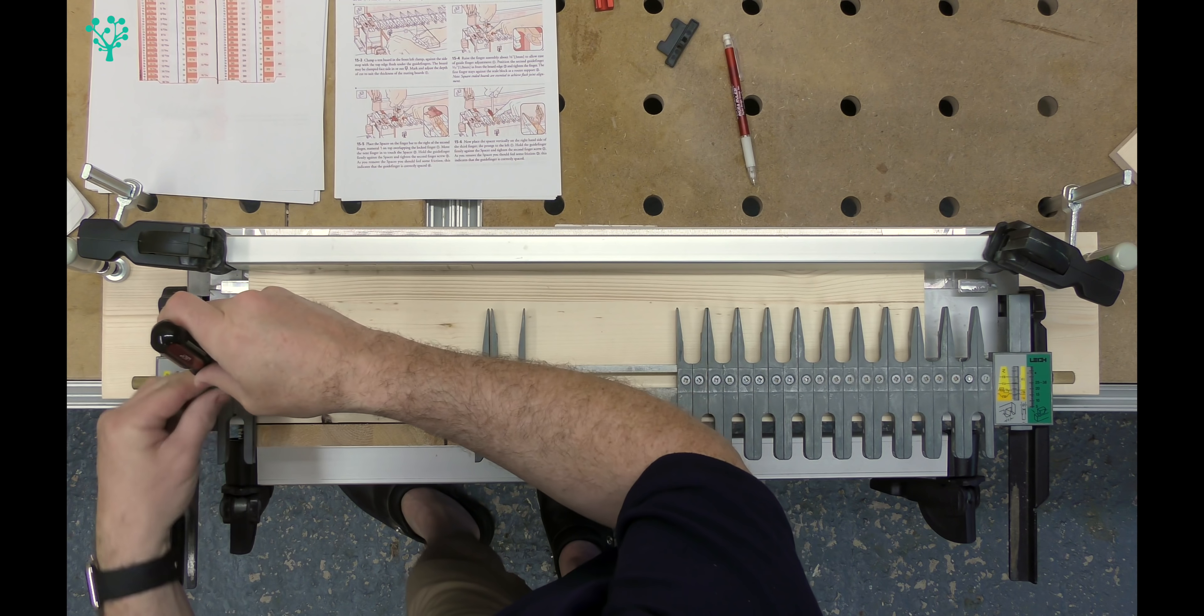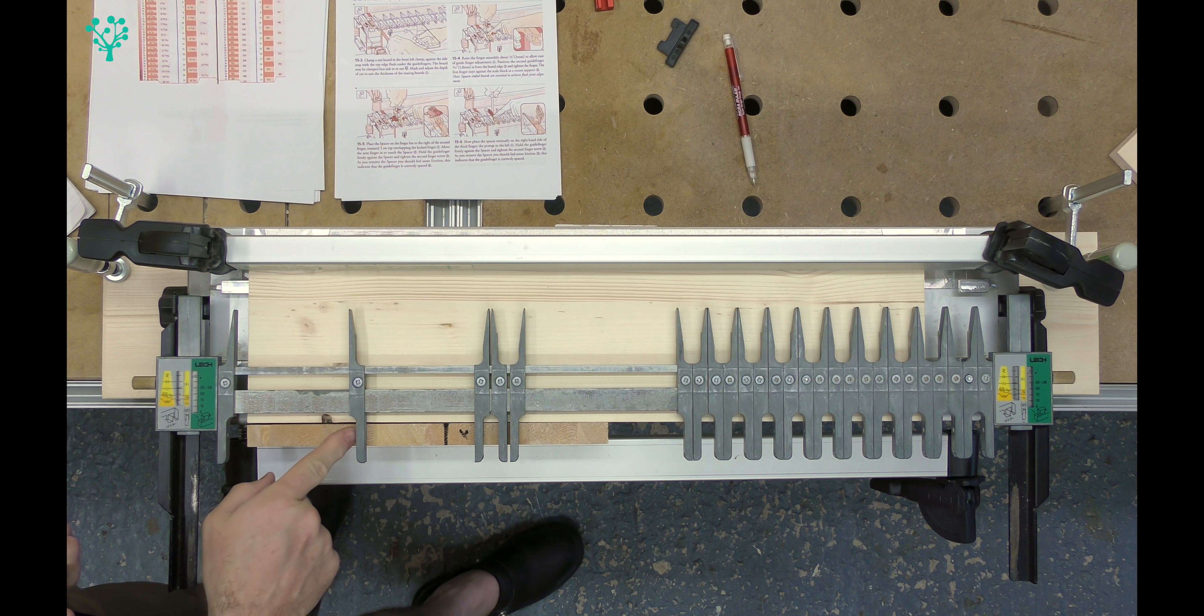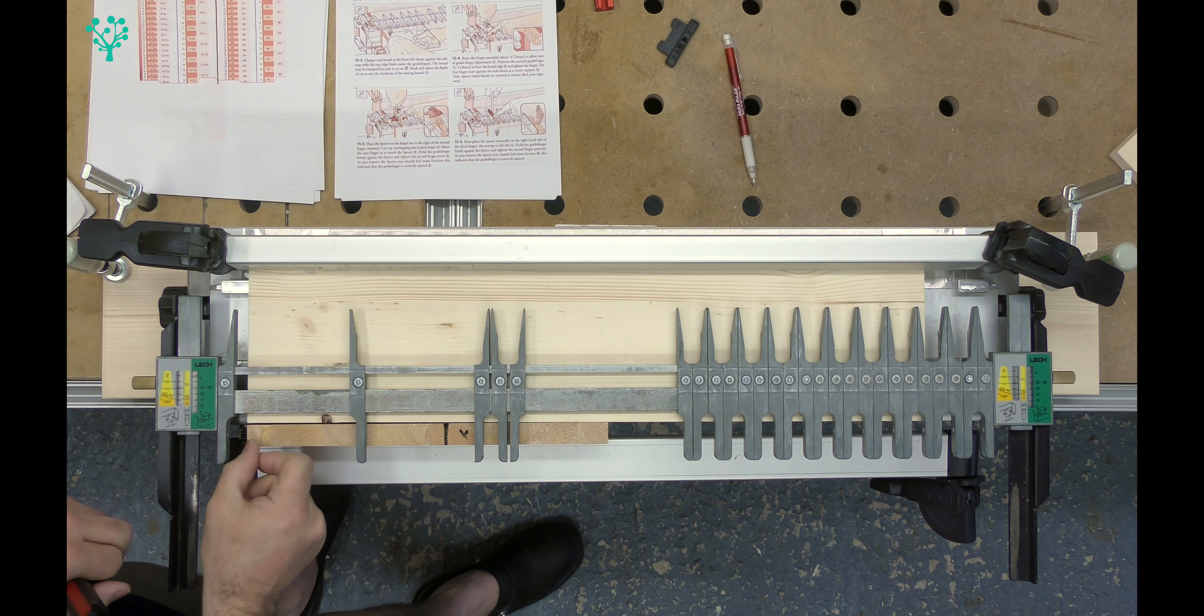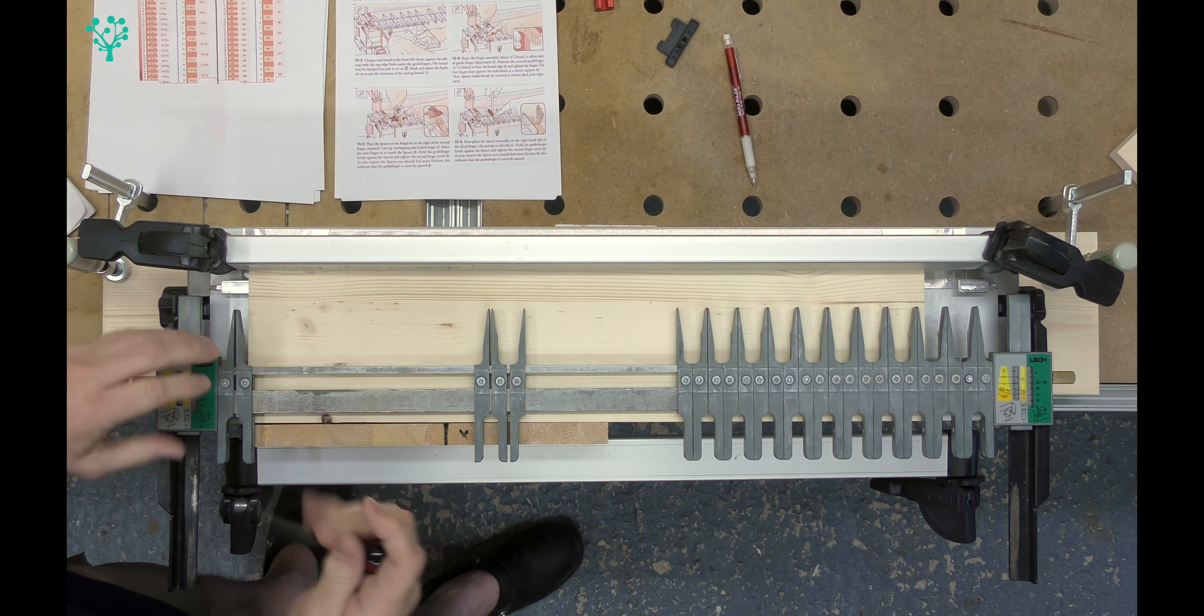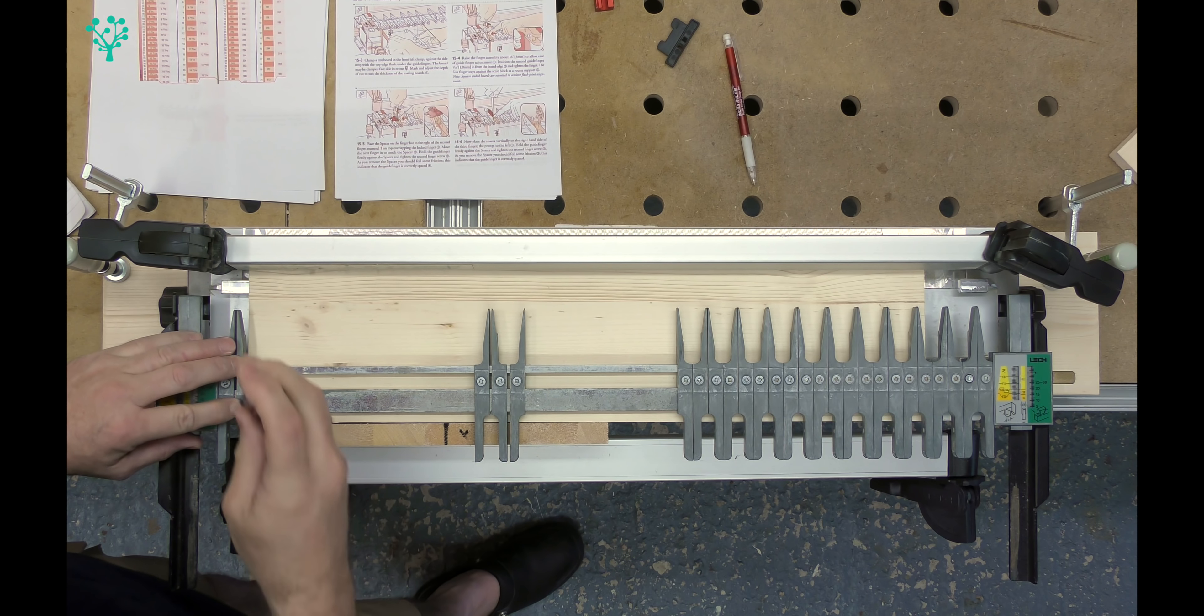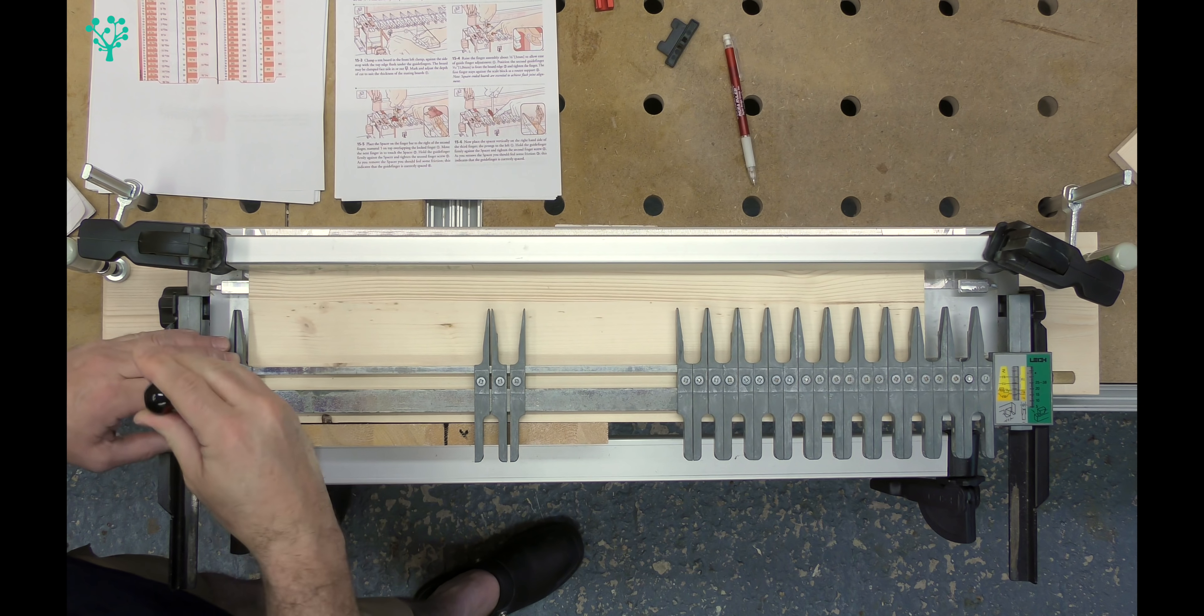Take your first finger and you want to slide that until the outside edge of the finger here is round about one millimeter from that end. So that's going to be round about there and then just lock that into place.